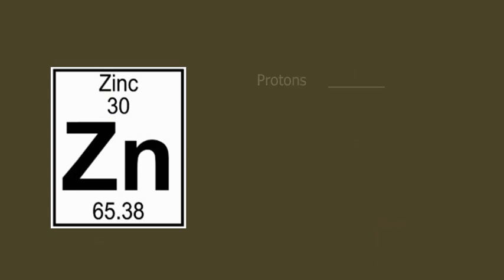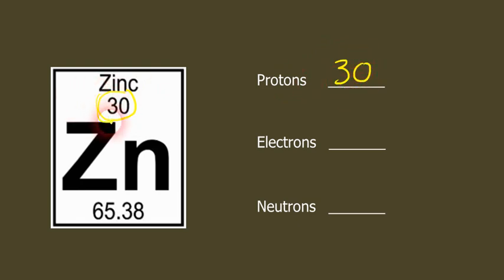Let's try zinc, element number 30. So the number of protons is its atomic number, so that's going to be 30 protons. The number of electrons will also be 30. And the number of neutrons will be 65 minus 30. So 65 minus 30 is 35. So we can see a typical atom of zinc is going to have about 35 neutrons.